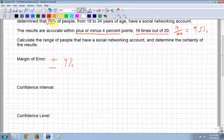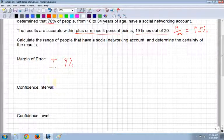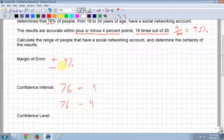Well, we know that the test says that 76% of people have a social networking account. Well, what's the confidence interval? We have 76 plus 4% and 76 minus 4% because remember that our margin of error, it could be plus or minus 4%. So it's 76, we need to have a range. You can't just say 76%.